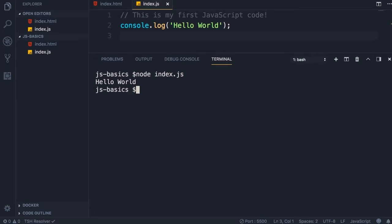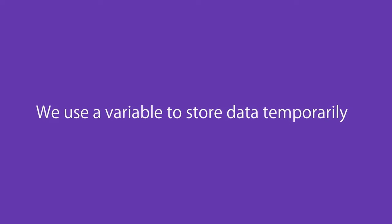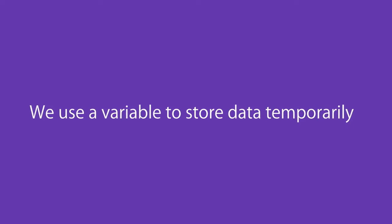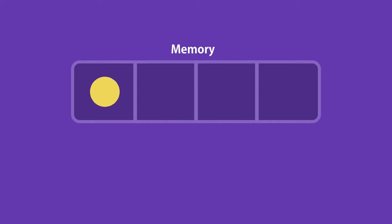Now in this course we're not going to work with Node anymore because Node is a completely separate topic. In programming we use a variable to store data temporarily in a computer's memory. So we store our data somewhere and give that memory location a name, and with this name we can read the data at that location in the future.